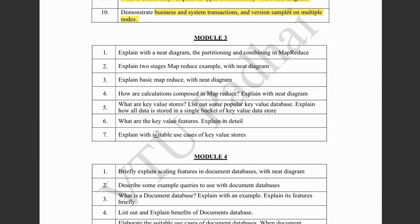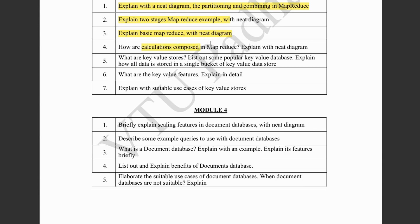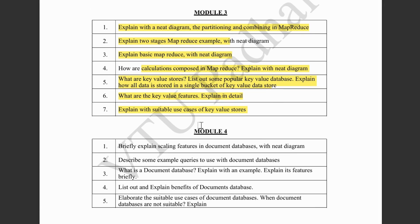Moving on to the third module, it's all about MapReduce and key-value databases. The first question is about partitioning and combining in MapReduce — draw the diagram, define it, and explain it. Next, the two stages of MapReduce — write an example and draw the diagram. Then basic MapReduce, and how calculations are composed in MapReduce — draw and explain the diagram. For the key-value database part: what are key-value stores, list out popular key-value databases, explain how data is stored in a single bucket of a key-value data store, what are the key-value features, and explain with suitable use cases of key values. These last two could be clubbed together for 10 marks. If you cover these seven questions, you'll be done with the third module.